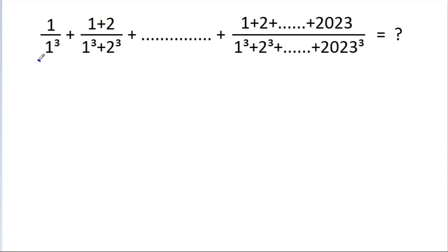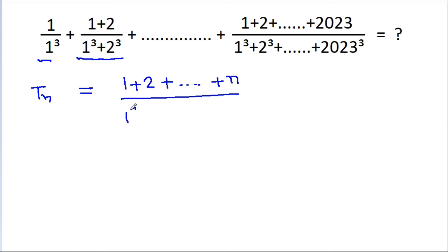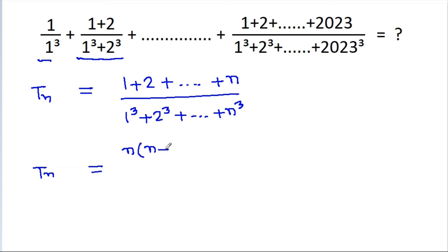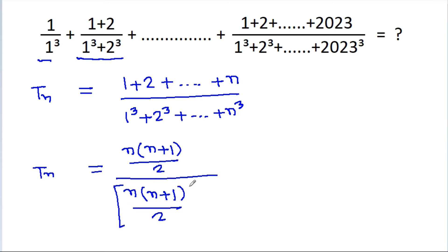The first term is 1/1³, the second term is (1+2)/(1³+2³), so the nth term Tn will be equal to (1+2+...+n)/(1³+2³+...+n³). Tn equals the sum of natural numbers from 1 to n, which is n(n+1)/2, divided by the sum of cubes of natural numbers from 1 to n, which is [n(n+1)/2]².